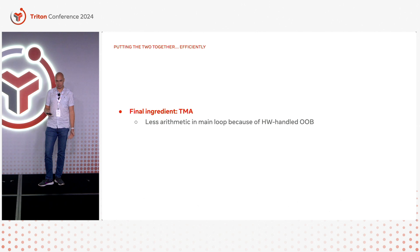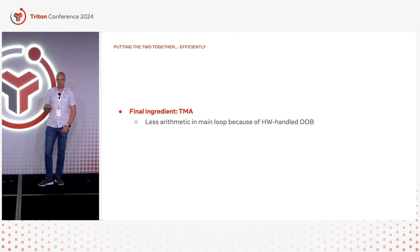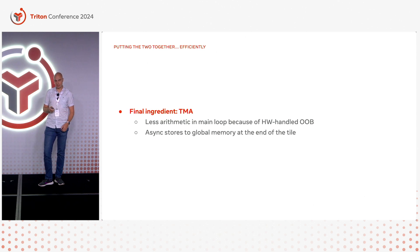The last ingredient was TMA. TMA — you heard about it today — is an NVIDIA feature introduced in Hopper that allows for hardware out-of-bounds checks. That was much needed as the loop became dense with control flow and arithmetic, making the instruction scheduler's life hard. It also provides a nice set of async operations like stores from shared to global memory, which was a kicker — otherwise your store completely stalls your beautifully crafted pipeline.